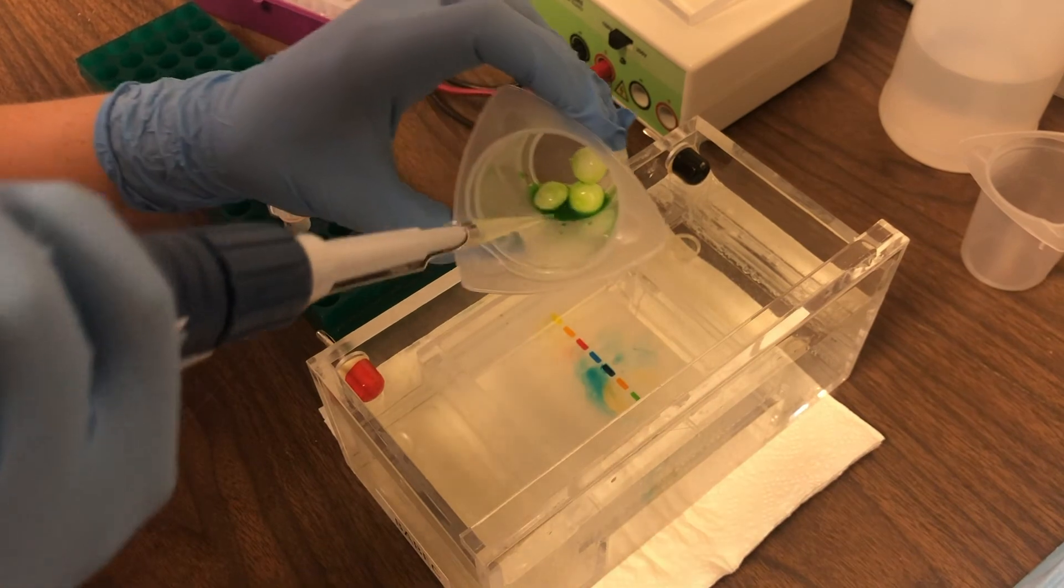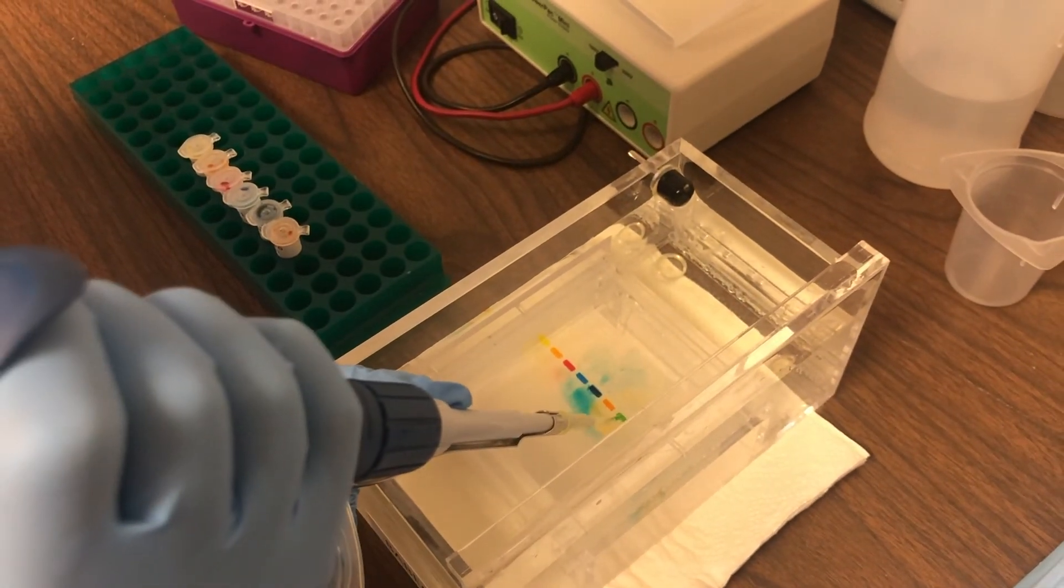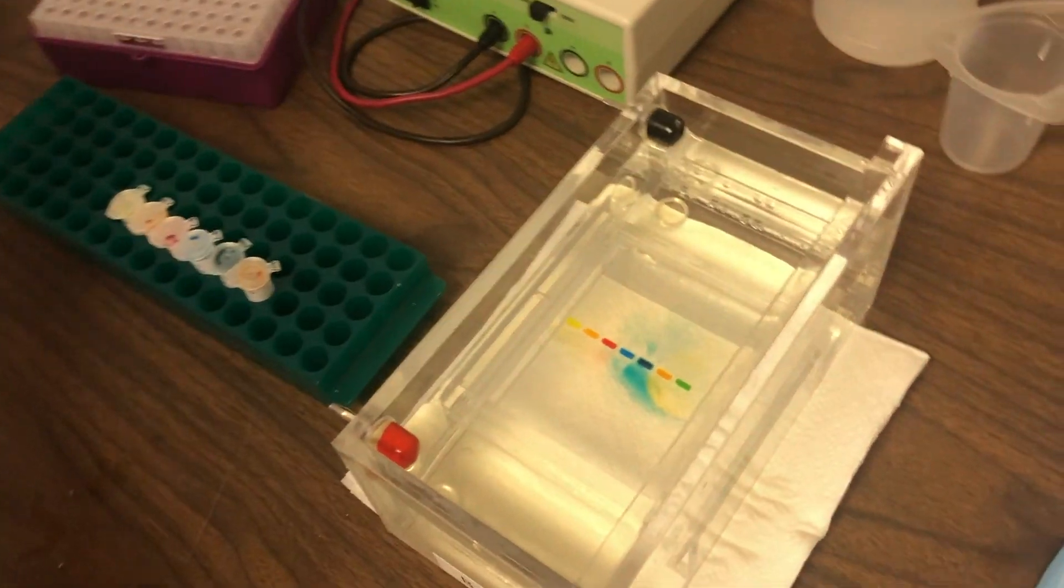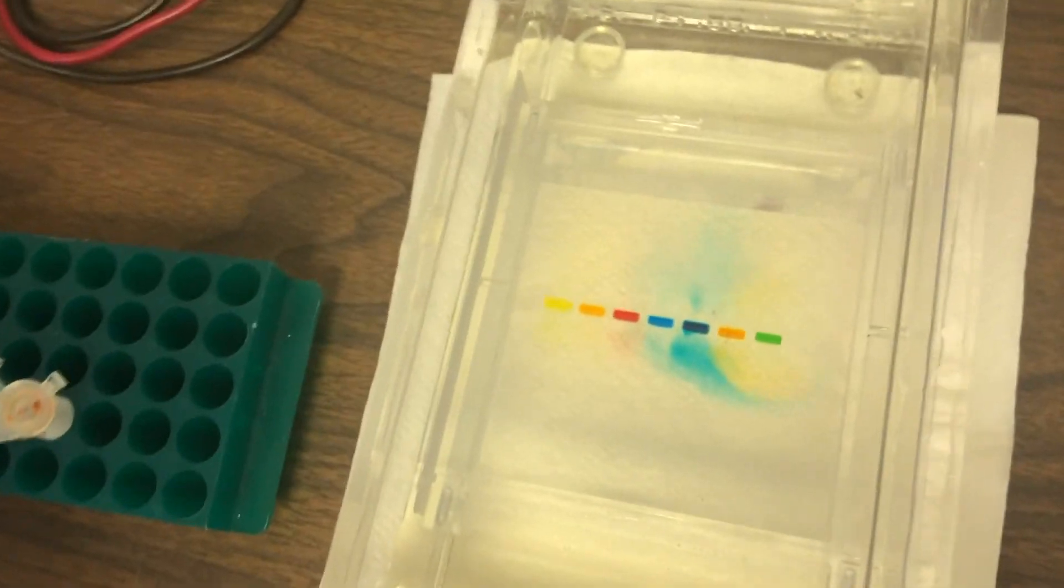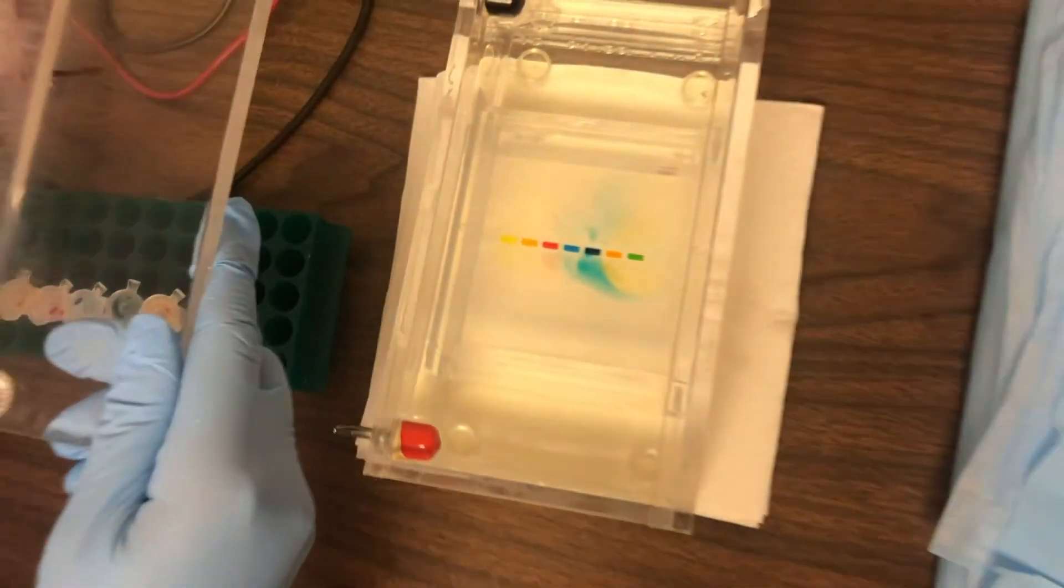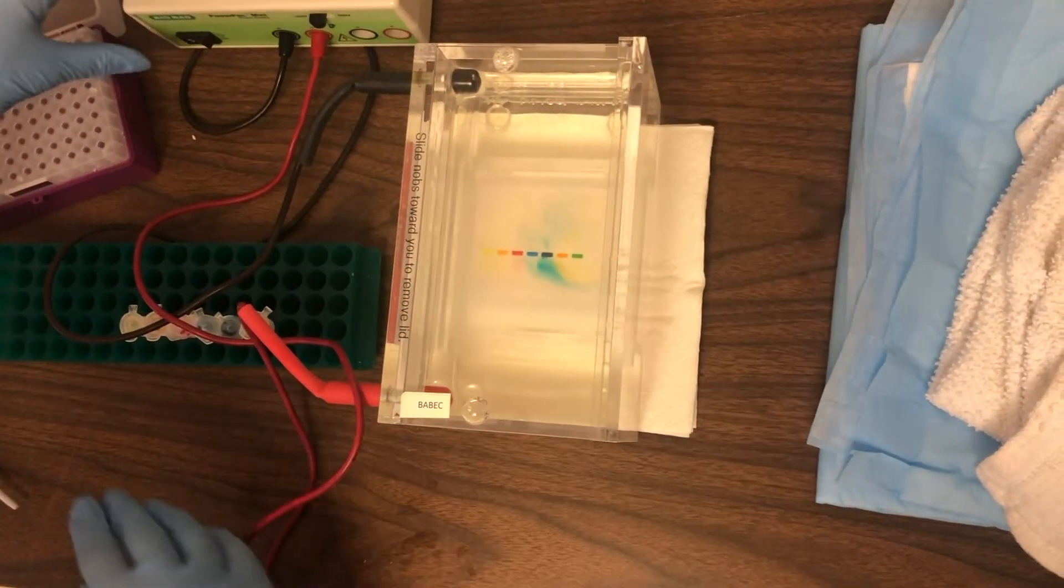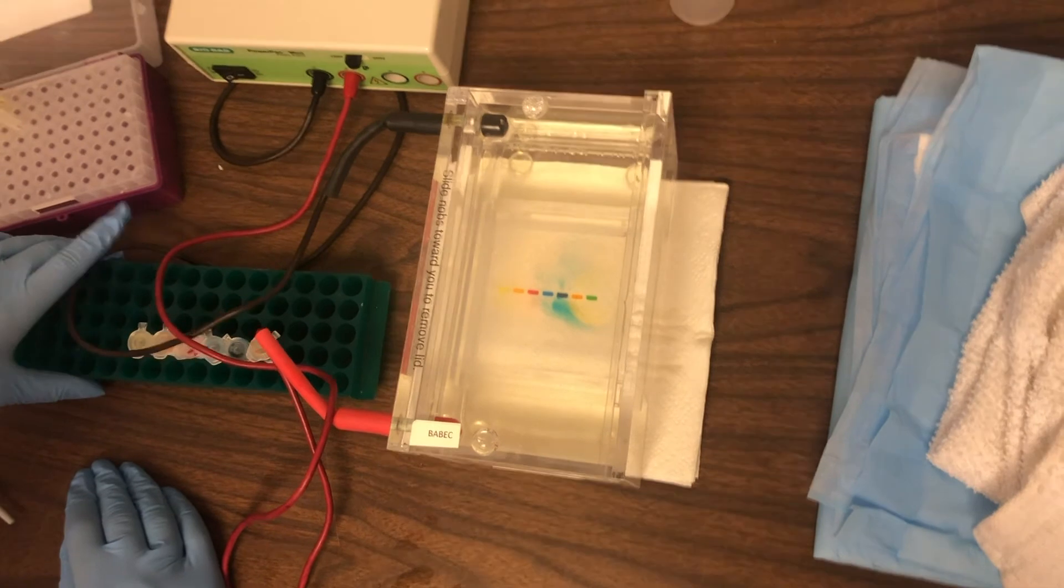So we're skipping ahead. We're adding the liquid from the outside of the green Skittle into lane 7. And as you can see, we have now loaded all seven of our samples and we're putting our lid on top of the electrophoresis box and starting the electricity through the gel.